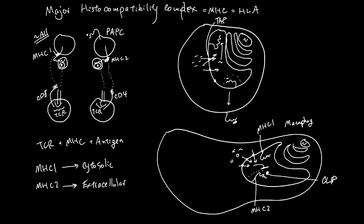And then this piece will bud off. Instead of going to the cell surface, it's going to stay in a vesicle, still bound to clip.